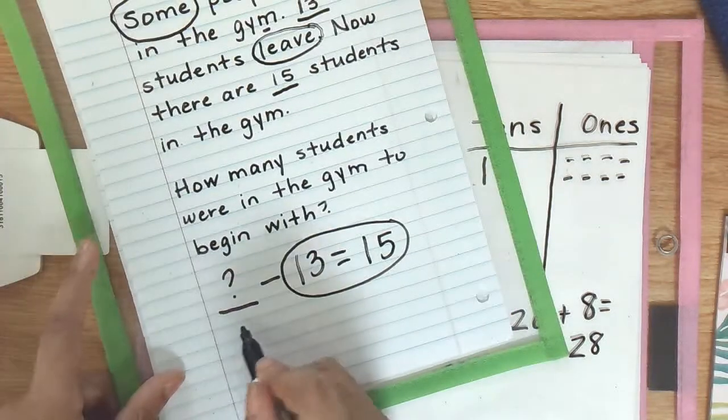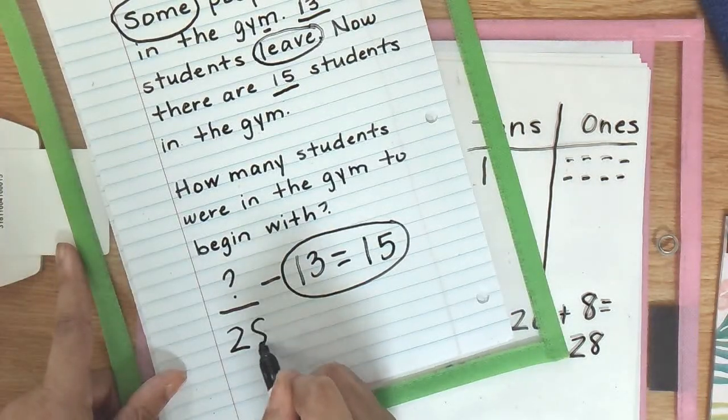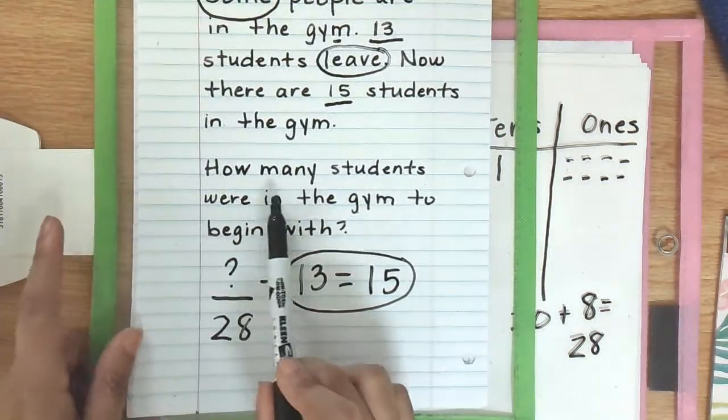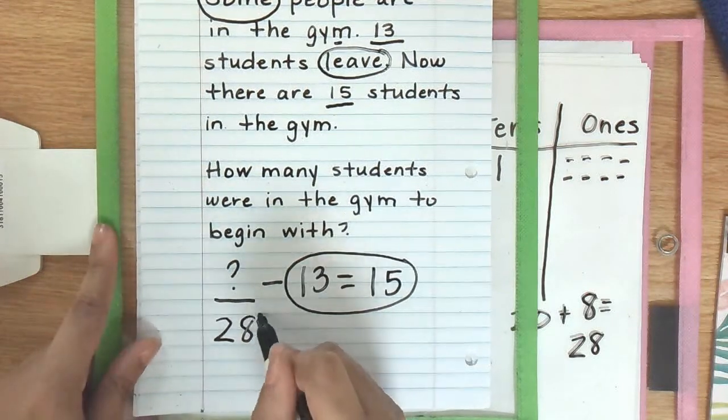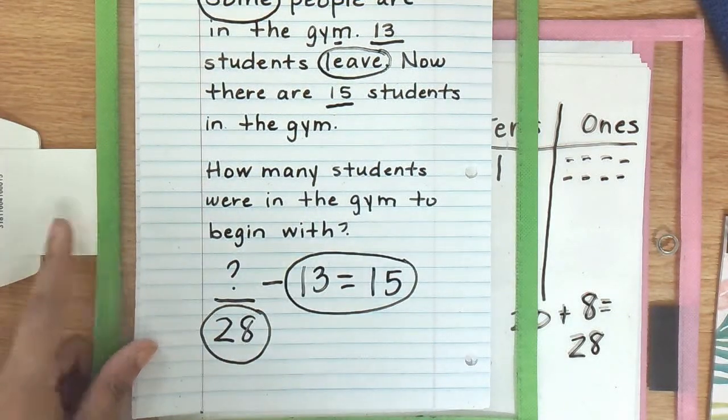Now that should be our answer, 28. So we will know that it says here how many students were in the gym to begin with. We should have an answer of 28.